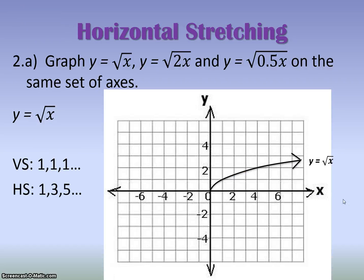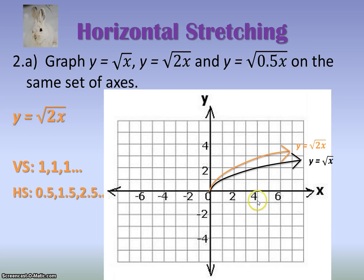Now let's graph them. Here's the original graph. And then we're going to go over a half, over a half and up 1. So over a half and up 1, then over 1 and a half, 1 and a half and up 1, and then over 2 and a half and up 1. So notice that it's been horizontally compressed.